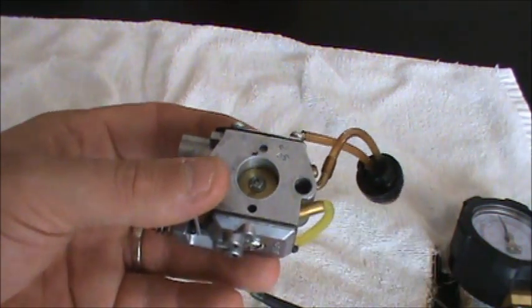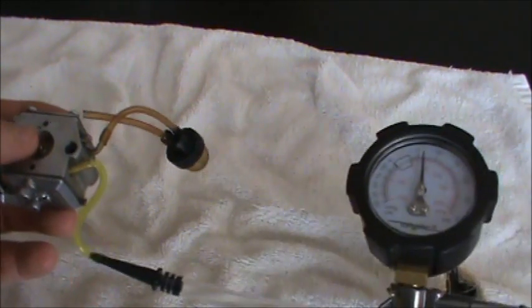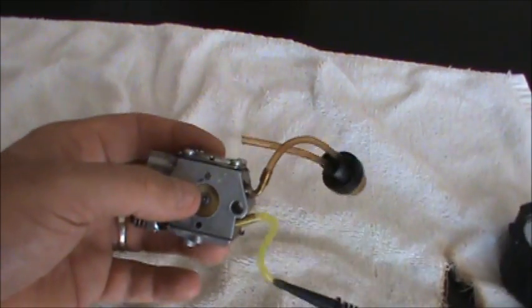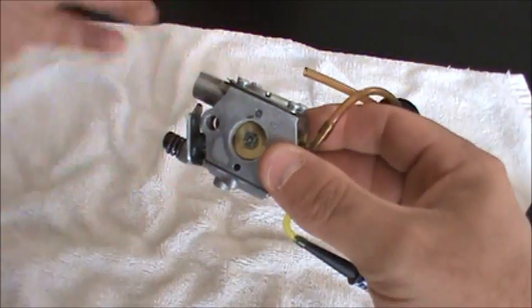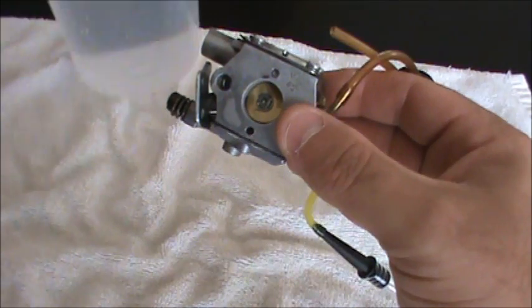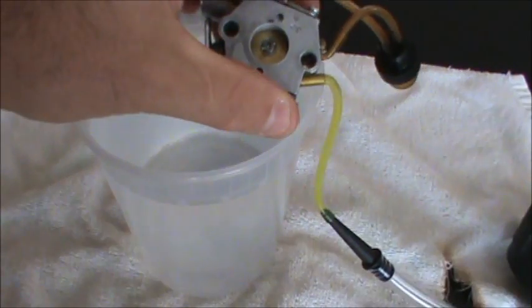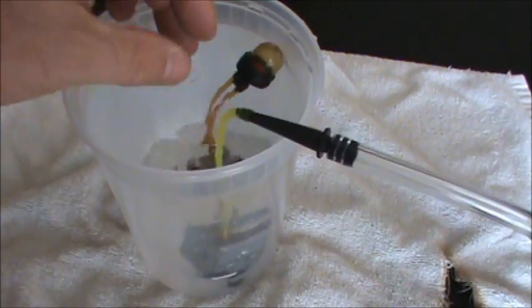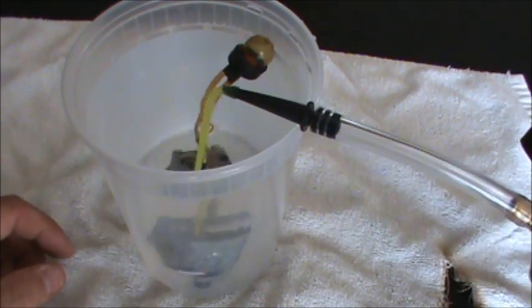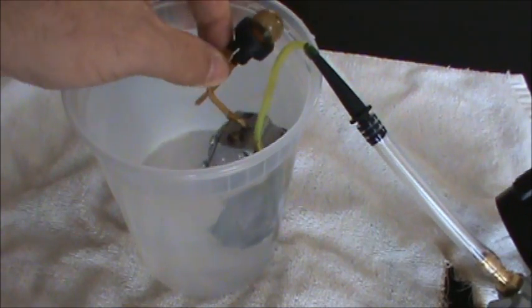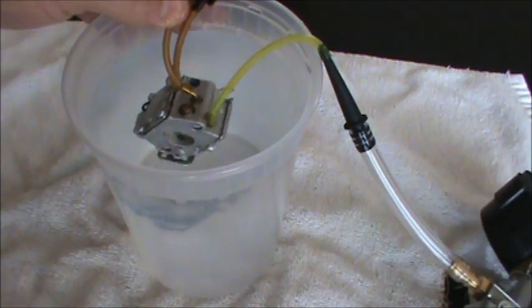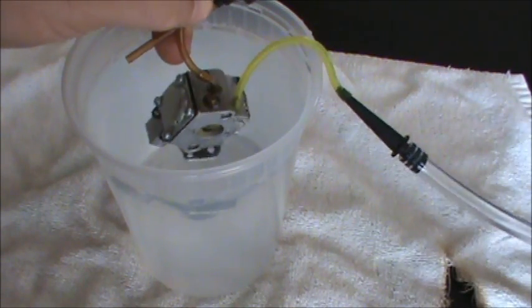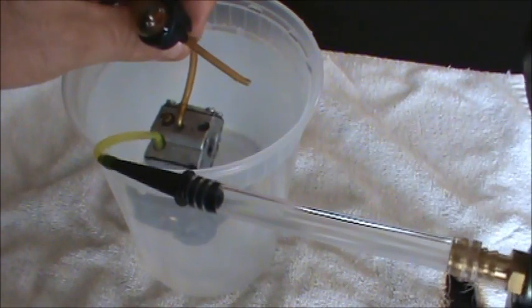So I'm going to pump this thing back up to 10. It's leaking very slow but it is leaking. And this is the type of stuff that you won't know unless you pressure test a carb. I'm dipping this thing in water and we're going to look for bubbles. And I can see the gauge is still going down.